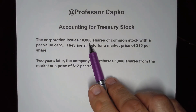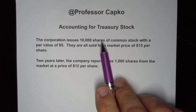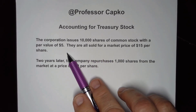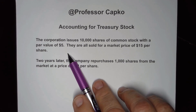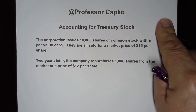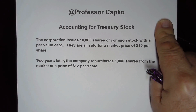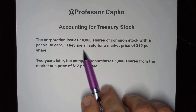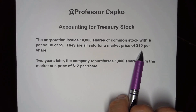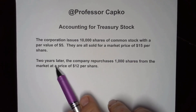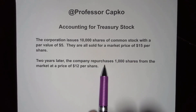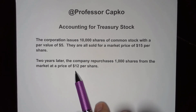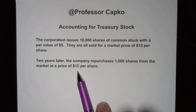In our example, the company first issues 10,000 shares of common stock with a par value of $5. They are all sold at a market price of $15 per share. Two years later, the company repurchases 1,000 shares from the market at a price of $12 per share.